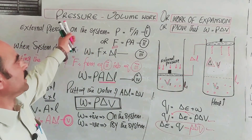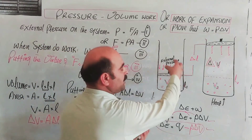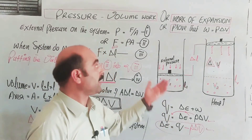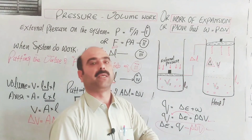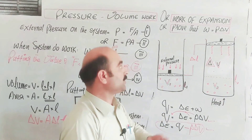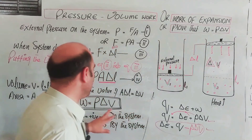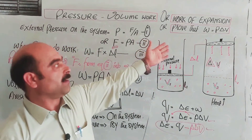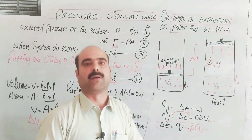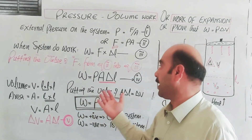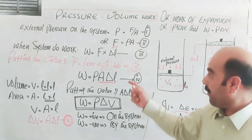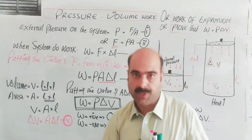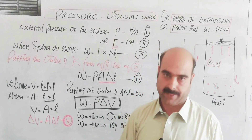This was all about pressure-volume work — internal pressure, external pressure, force applied, distance covered, and work of expansion for thermodynamics. The only work considered here is work of expansion, represented as P delta V. We have proven that W equals P delta V. Thanks a lot for watching. This is a very important mathematical and theoretical topic — with practice, it will become easy. Inshallah. Thanks a lot.